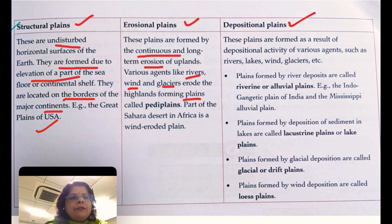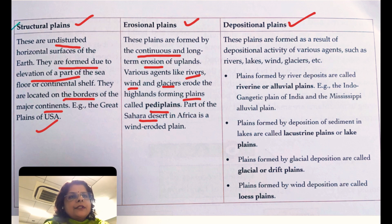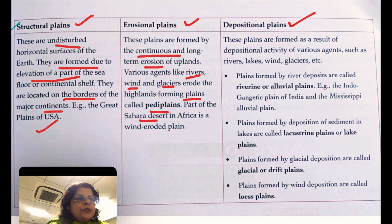When highlands are brought completely to a low level and become completely flat, they are known as peneplains. The Sahara Desert is an example of a wind-eroded erosional plain.